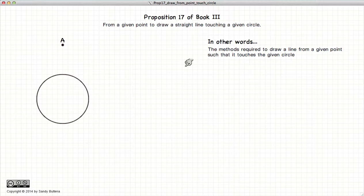This video presentation is going to be on Proposition 17 of Book 3, which describes the methods necessary to take a given point and a circle and to draw a line such that it just touches the circle.